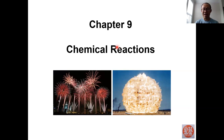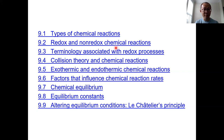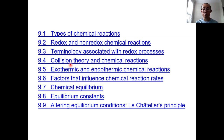In this chapter, we're going to discuss the types of chemical reactions, introduce factors affecting chemical reaction — especially the rate of chemical reaction — and then talk about the heat energy involved in the reaction, and also why there's a reaction and how we can explain the heat and rate of reactions. That's the second part of this chapter.